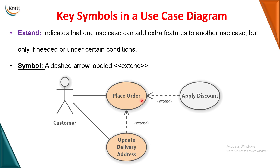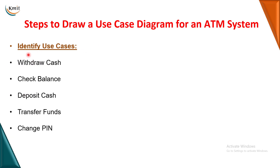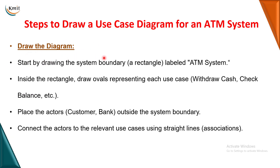Now let us see the steps to draw a use case diagram. First, identify the actors. Second, identify the use cases. Once done, draw a system boundary; place the use cases inside it and place the actors to the left and right outside the system boundary. Then start giving the relationships, and if needed, use includes and extends.